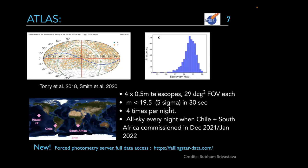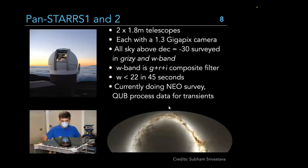ATLAS was mainly set up to monitor near-Earth objects, but with reference images available, people dig deeper and find different types of objects. A similar task is done by PanSTARRS — about two telescopes of 1.8 meters each, one of the most complete surveys along with ZTF in the northern hemisphere, covering approximately three-pi steradians of sky up to about 22 magnitudes depth.